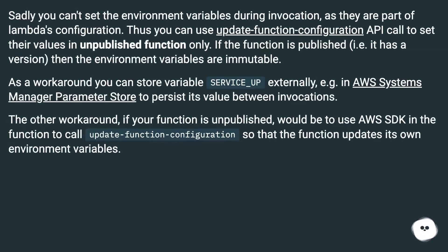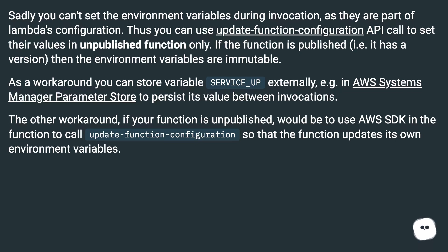Sadly, you can't set the environment variables during invocation, as they are part of Lambda's configuration. You can use the update function configuration API call to set their values in an unpublished function only. If the function is published — i.e., it has a version — then the environment variables are immutable.